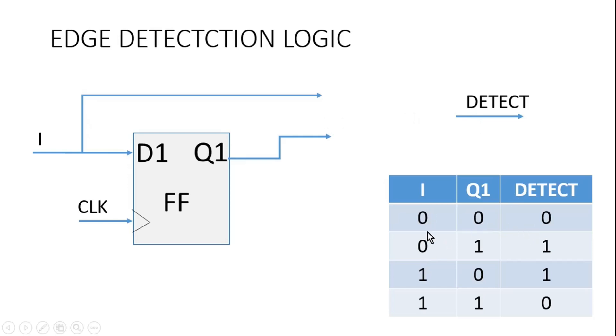Similar case, when I is 1, Q1 is 0. When Q1 is 0, that means in the previous cycle I was 0 and now I is 1. So in this case also detect should go high. Last case, when I is 1, Q1 is 1, that means input is not changing, so detect will remain 0.